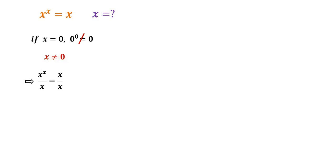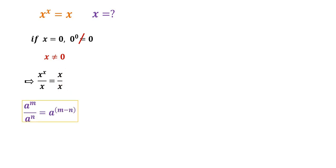Then we can safely divide both sides by x. We have x to the power of x over x is equal to x over x. Applying the rule that a to the power of m over a to the power of n is equal to a to the power of m minus n, we get x to the power of x minus 1 is equal to 1.